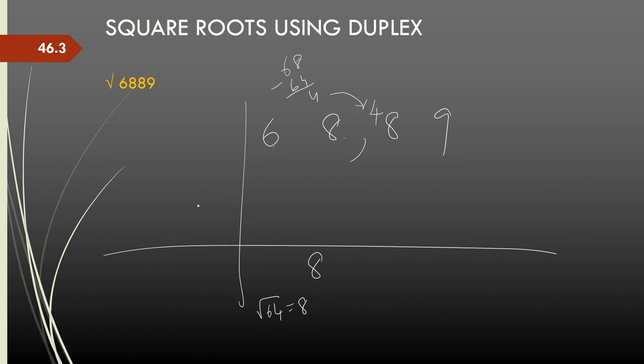Now, I write 8 times 2 here. 8 times 2 is 16. So my divisor is 16. So 48 divided by 16 is 3. No carry forward. Now, the adjustment here in this for 9 is D of 3, which is 3 square 9. So minus 9 is 0 and hence my process stops there. So the answer is 83. Square root of 6889 is 83.